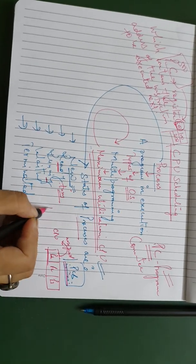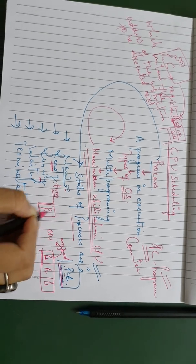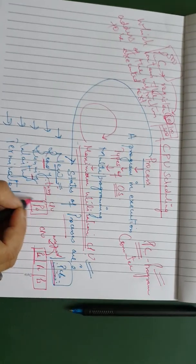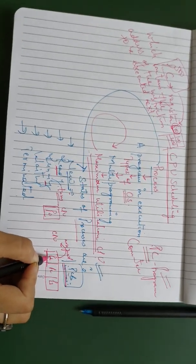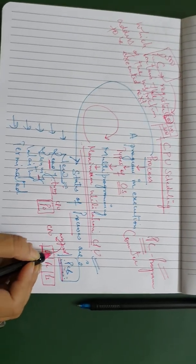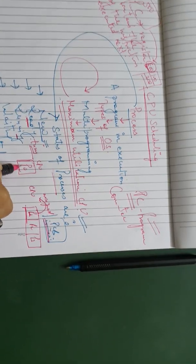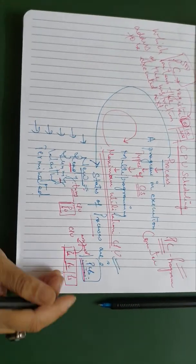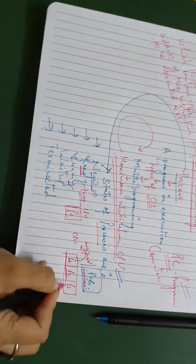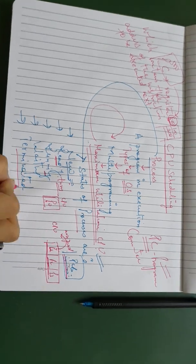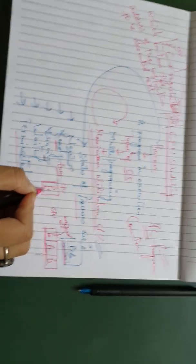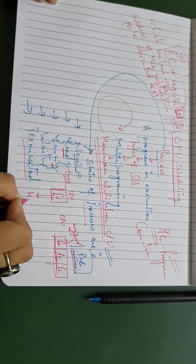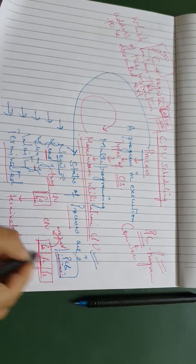Now suppose p0 is being held by the CPU — the CPU is running process p0, so p0 is in the running state. p1 is in the ready state. p2 and p3 are at the tail of the queue, so they are in the waiting state. Terminated means that once p0 completes its execution and leaves the CPU, it is in the terminated state.